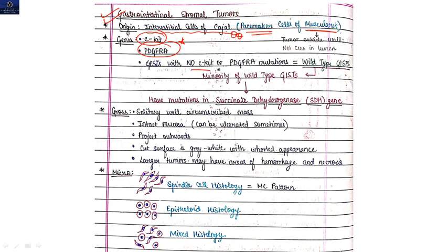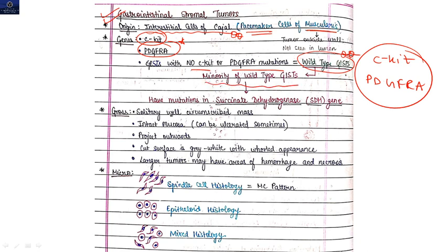GIST with no c-KIT or PDGFRA mutation also seen, which is known as wild-type GIST, in which there is no mutation in c-KIT or PDGFRA gene. But minority of wild-type GIST have mutation in succinate dehydrogenase. This is important, another MCQ question.